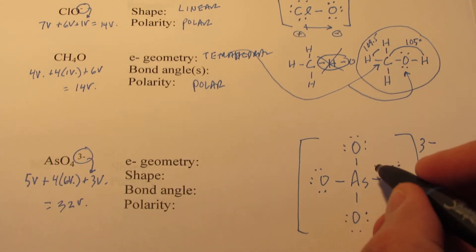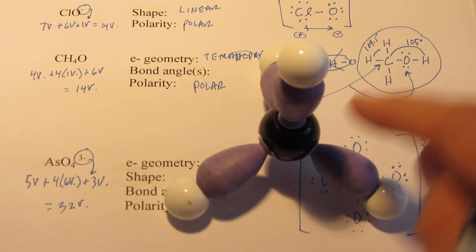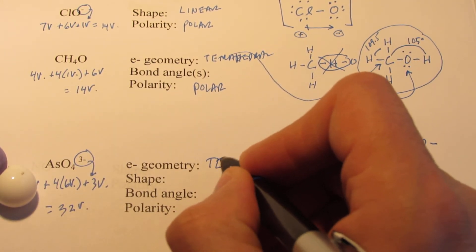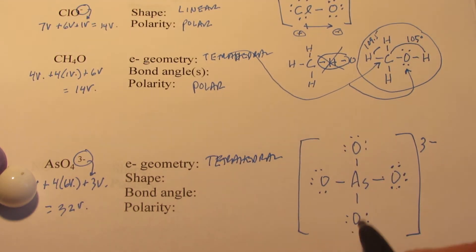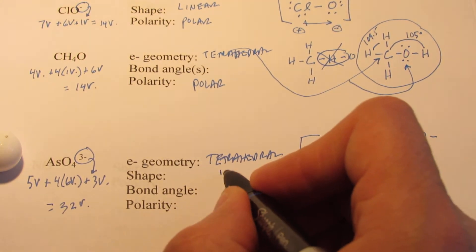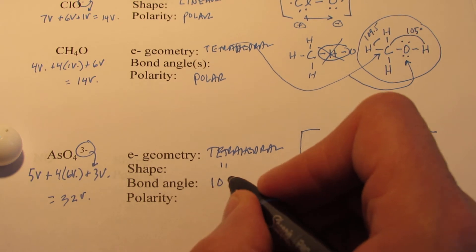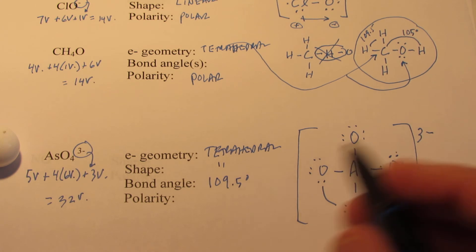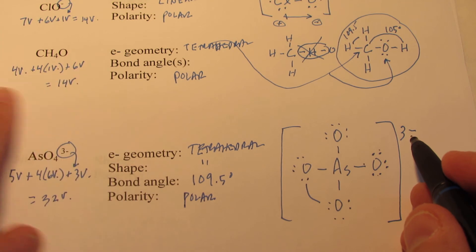Now the electronic geometry about the central atom, once again, we see 4 pairs. I don't care if they're bonding or not, we're just looking at the 4 pairs. Whenever you see 4 pairs of electrons, we call that tetrahedral. And all 4 pairs are bonding, so the molecular shape is also tetrahedral. And that angle, that's right, 109.5 degrees. Now this is an ion, and we will call all ions polar. Have a three negative charge here.